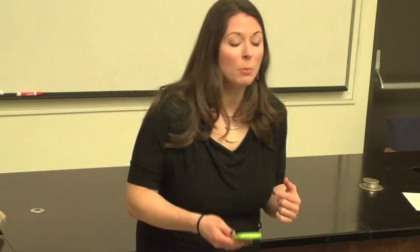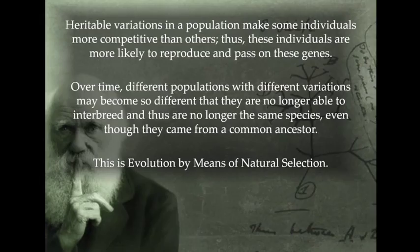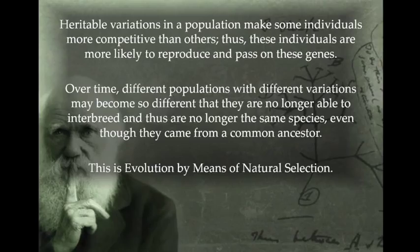Really, this is evolution: heritable variations in a population make some individuals more competitive than others. Thus, these individuals are more likely to reproduce and pass along these genes. Over time, different populations may become so different that they are no longer able to interbreed and have viable offspring — they become so different that they are no longer the same species, even though they came from the same ancestor. This is evolution by means of natural selection, and that's all it means.